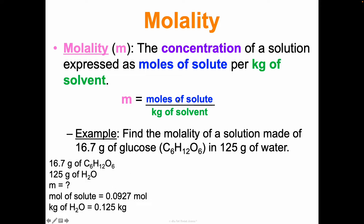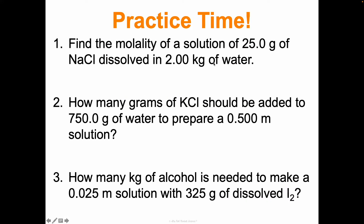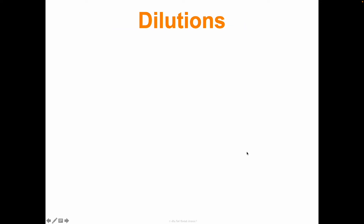Now I know my moles of solute and kilograms of solvent, so I can just plug and chug. Molality equals moles over kilograms: 0.0927 divided by 0.125 gives a molality of 0.742 moles per kilogram. You could also write this as 0.742 lowercase m. Either way is fine. Now practice more derivations of these, and then we'll learn one last type of math: dilutions.